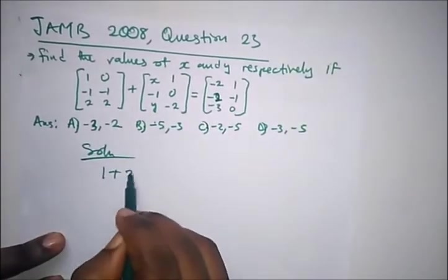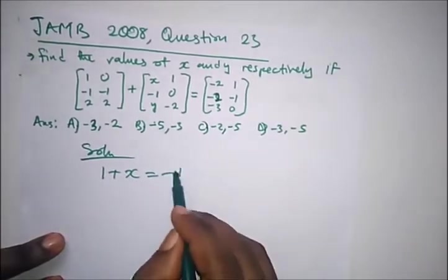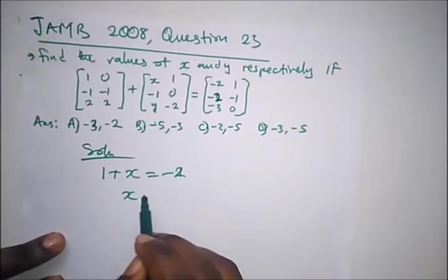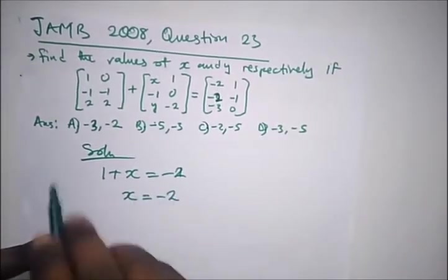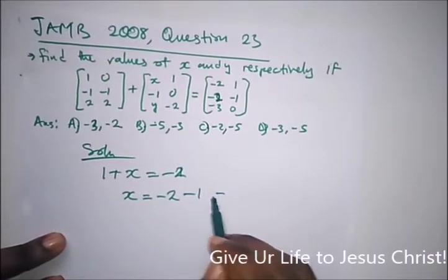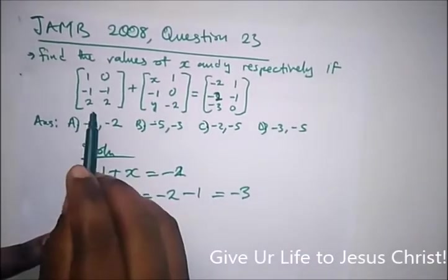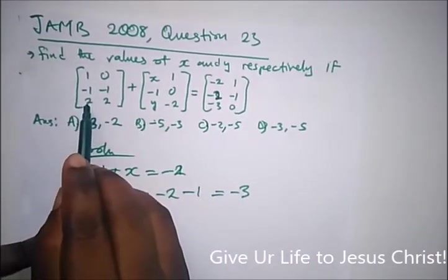So 1 plus x equals minus 2. To get x, it would be x equals minus 2, taking minus to the other side minus 1, and x is minus 3.